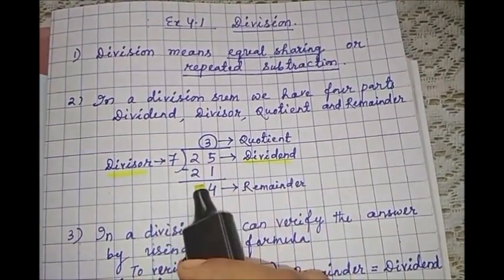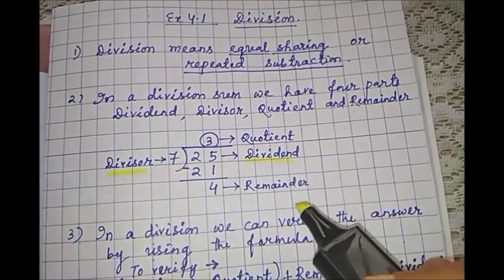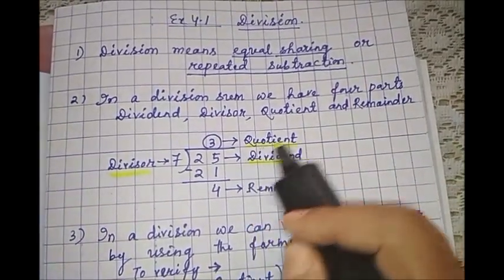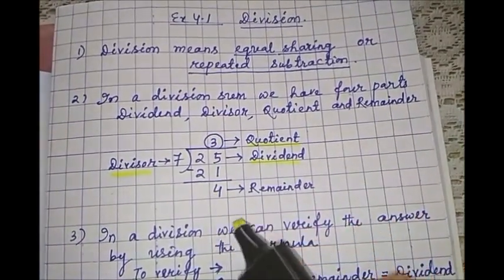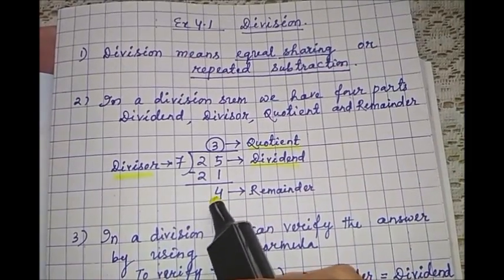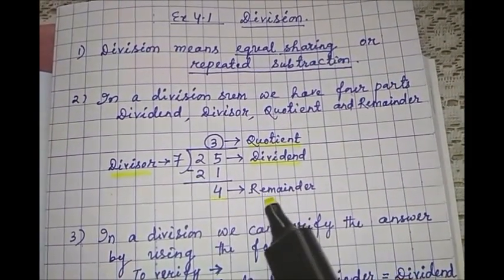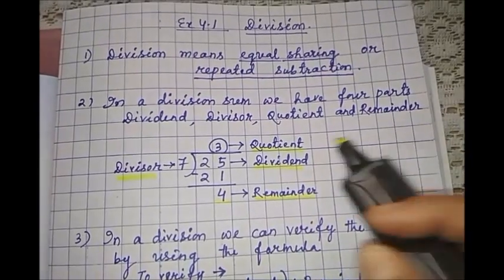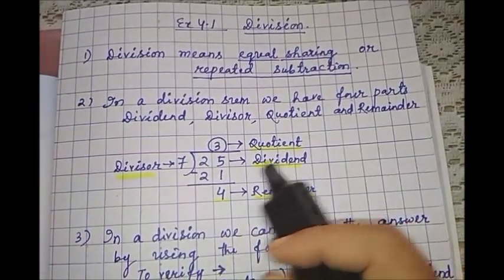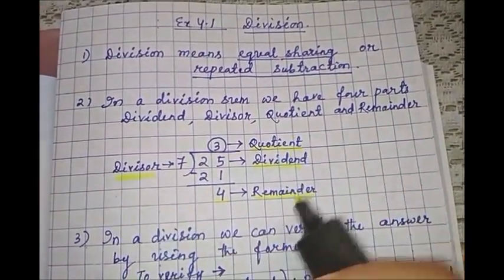And 7 times 3 is 21. So here 3 is the quotient and after the division, what number we are getting here? 4 is left over and this is called remainder. So these four parts are there: dividend, divisor, quotient and remainder.